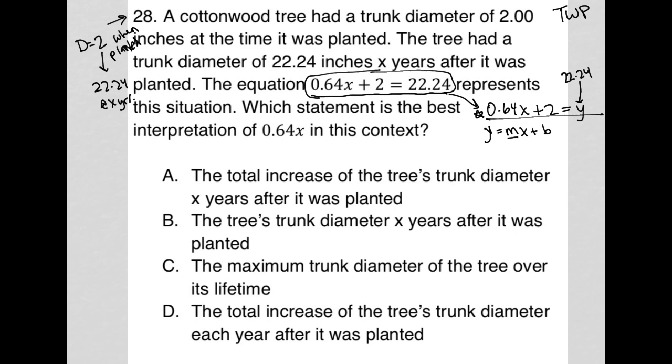Where m is 0.64. Let's use a different color. And therefore we know that m being 0.64 means that 0.64 is the slope. Now what is slope? Slope is rise over run.